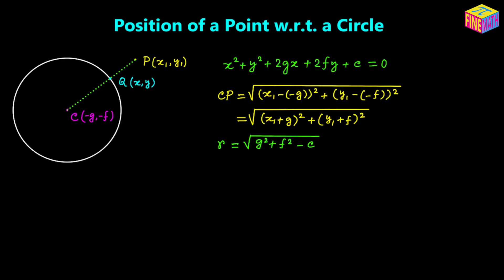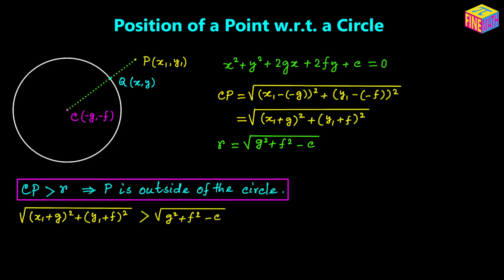Now let's take the first scenario where CP > r. That means the distance CP is greater than r, so point P will be outside of the circle. The necessary condition for point P to be outside of the circle is that the length of CP must be greater than the length of the radius. So if CP > r, then P is outside the circle.